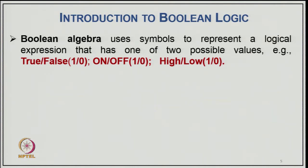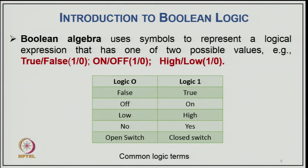Boolean algebra uses symbols to represent logical expressions that have one of two possible values: true/false, 1 or 0, on/off, high/low, yes/no, or open/closed switch. Logic 0 represents false, off, low, no, or open switch, while logic 1 represents true, on, high, yes, or closed switch. These are the common logic terms used in Boolean algebra.